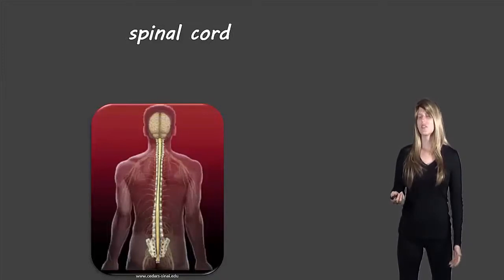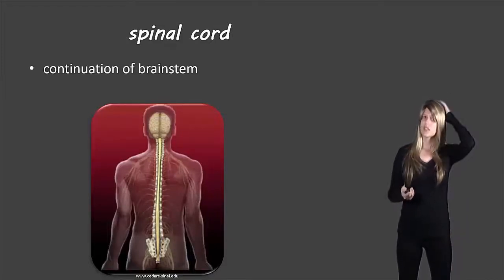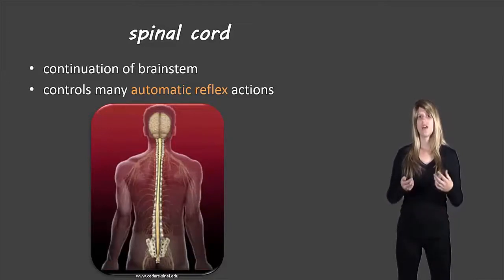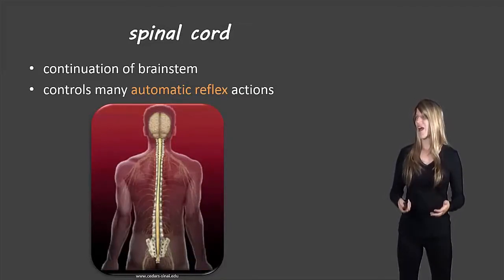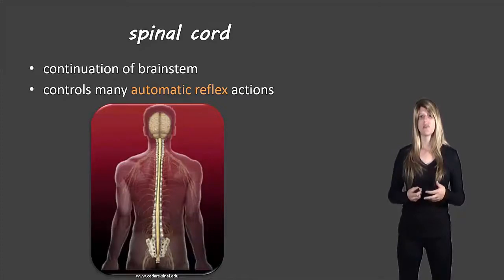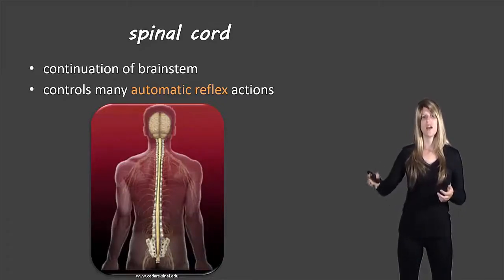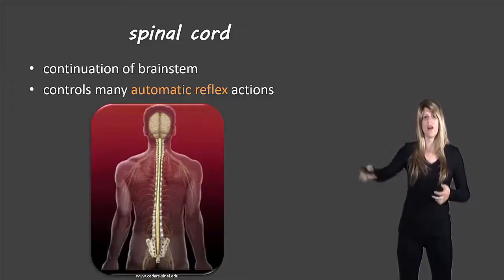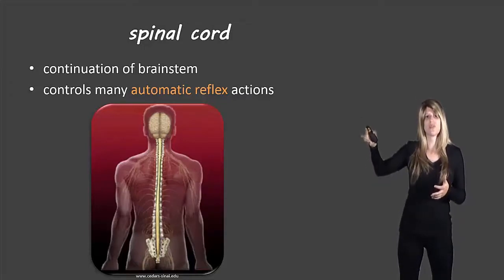Next, the spinal cord. This is just a continuation of the brain stem and it controls a lot of automatic reflex actions. For example, if you go to touch something on the stove that's really hot, you'll touch it, grab it, and then automatically just drop it.